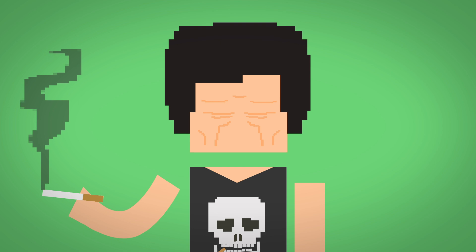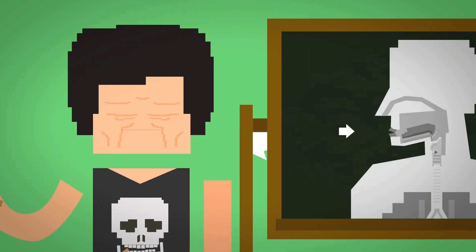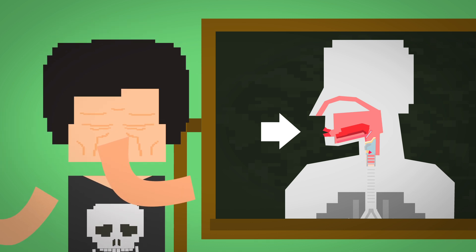As you breathe in tobacco smoke, the chemicals kill the good bacteria in your mouth. This causes you to have a dry, itchy mouth and bad breath. As the smoke enters your nose and throat, the chemicals irritate the lining, which can make you start to cough.